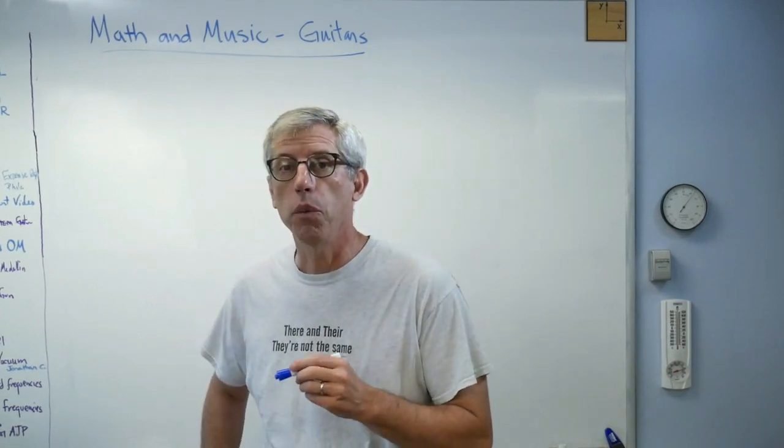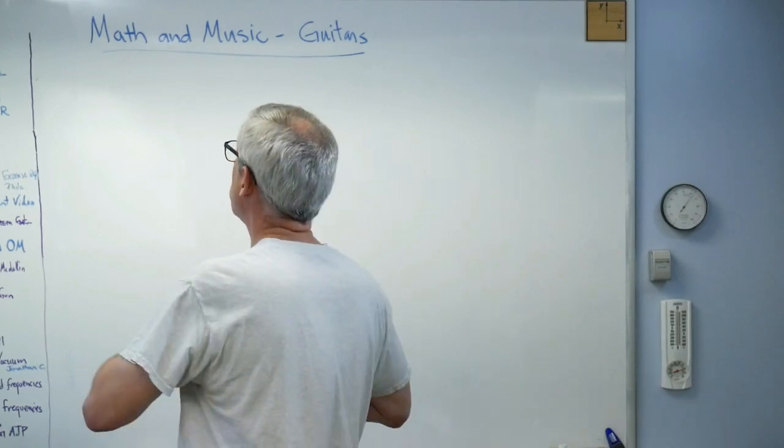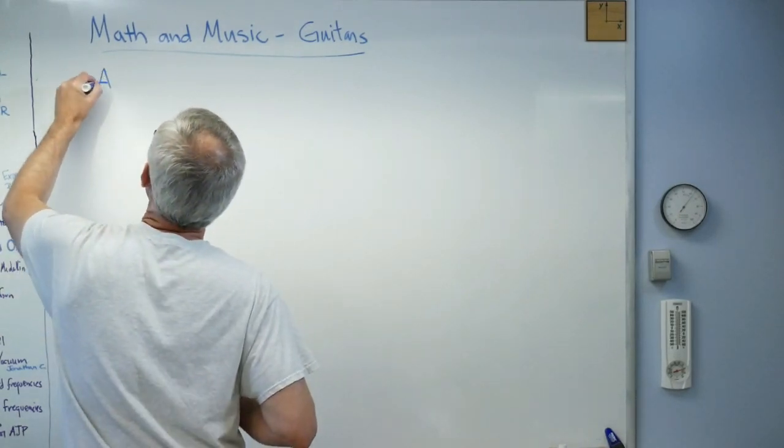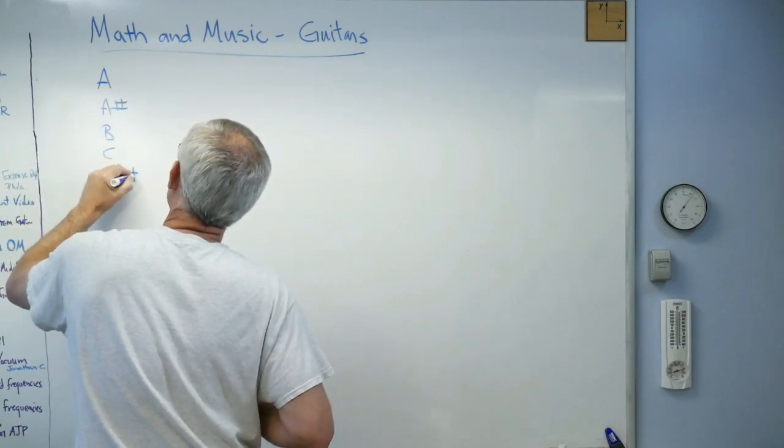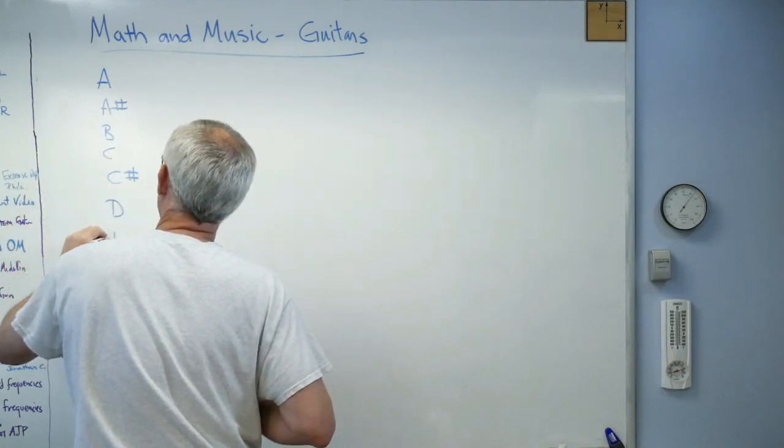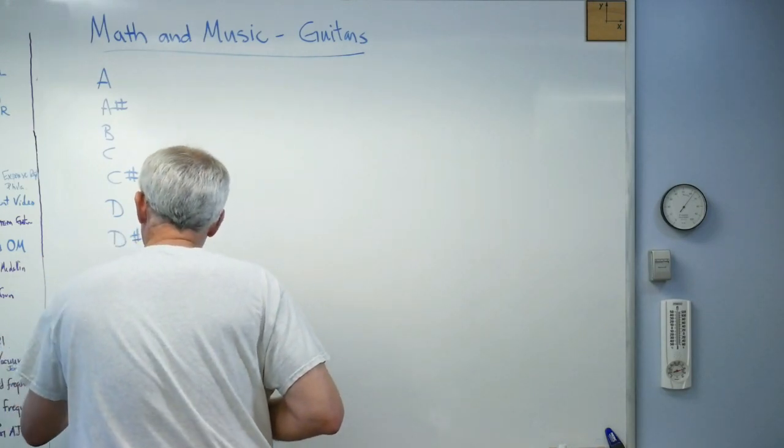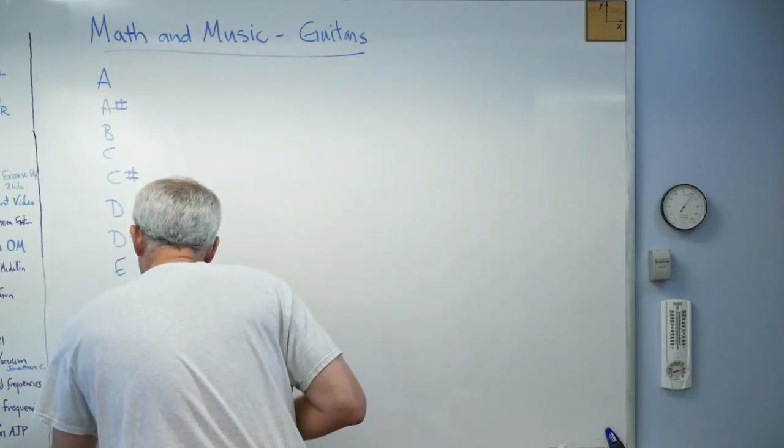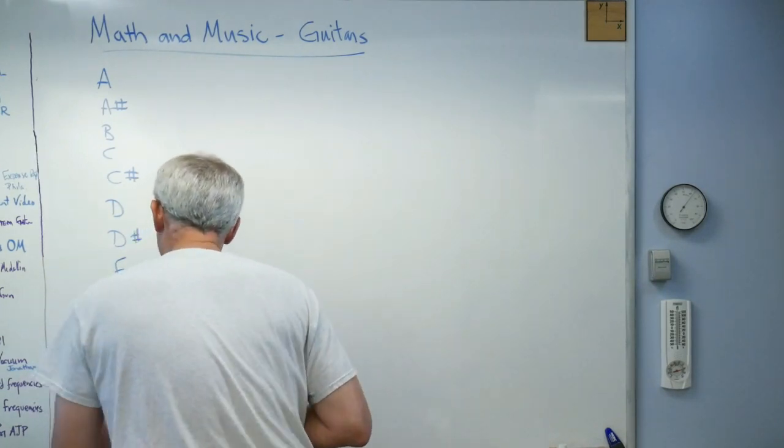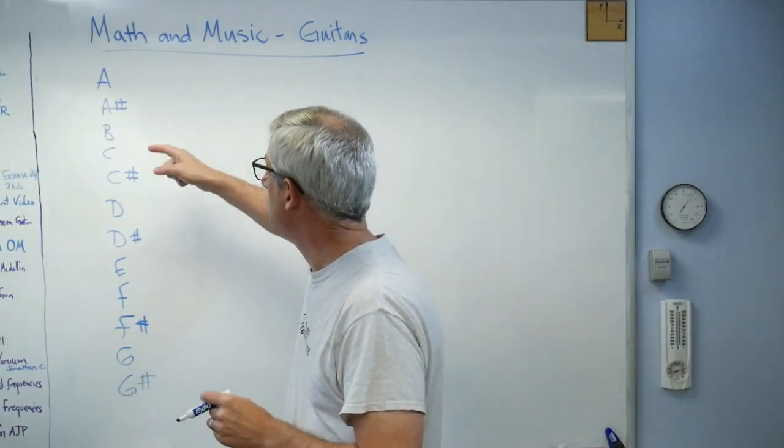Right now, music is made of something called intervals, and so if you look at some musical notes here: A, A sharp, B, C, C sharp, D, D sharp, E, F, F sharp, G, oh boy I'm running out of room, G sharp, there we go. You see all that? Yeah, we can work with that.